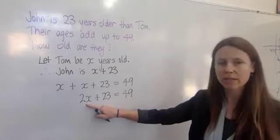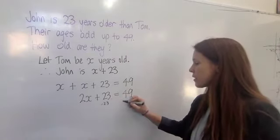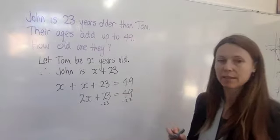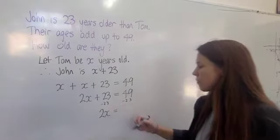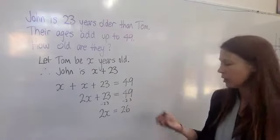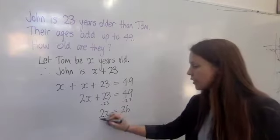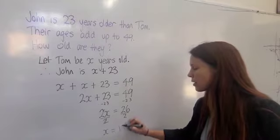To get those two x's on their own, if I subtract 23 from both sides, take it away here and take it away there, then this side of the equation will just have the two x's, and this side will give me 26. I need to half both sides to find out what one x is, and x is equal to 13.